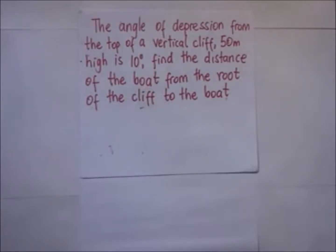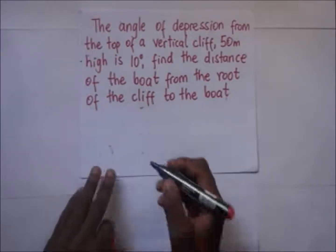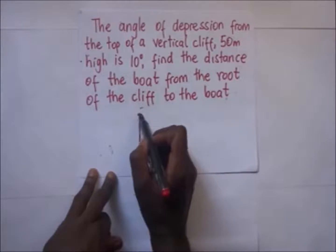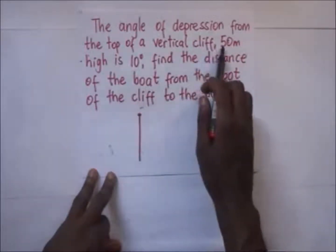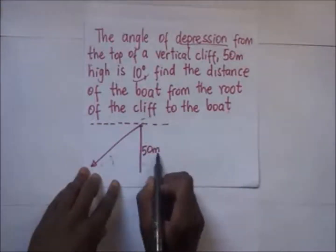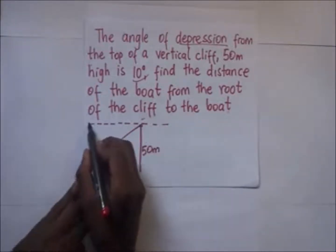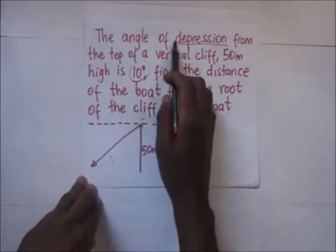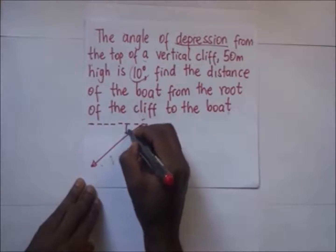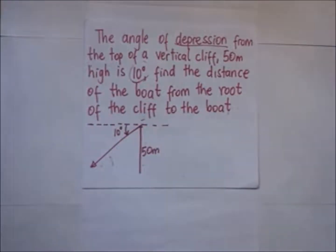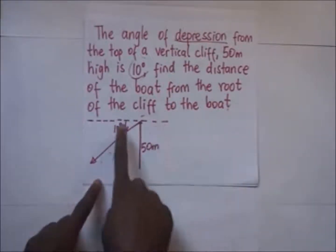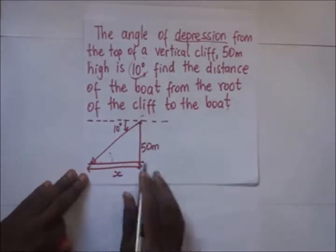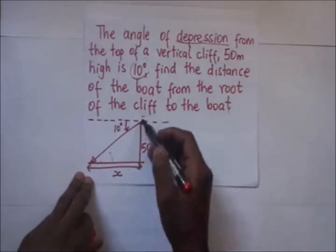Next example: the angle of depression from the top of a vertical cliff 50 meters high is 10 degrees. We have a cliff here — the cliff is 50 meters high. The person seeing is at the top of the cliff, so this is our horizontal. The angle of depression is 10 degrees to see whatever is below. They're asking us to find the distance of the boat from the root of the cliff — call it x. This is a right-angle triangle.